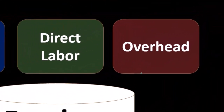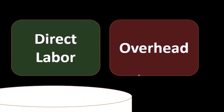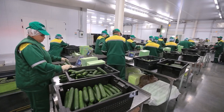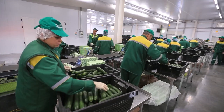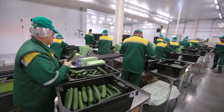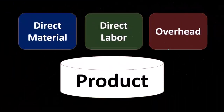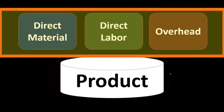And then the overhead — anything dealing with the factory will be part of the inventory. If we have depreciation on the factory, maintenance on the factory, or supervisors within the factory who are paid salary, all of that is going to be in the inventory in some way. They're going to be part of the product. So anytime we think of inventory, we have direct materials, direct labor, and overhead.